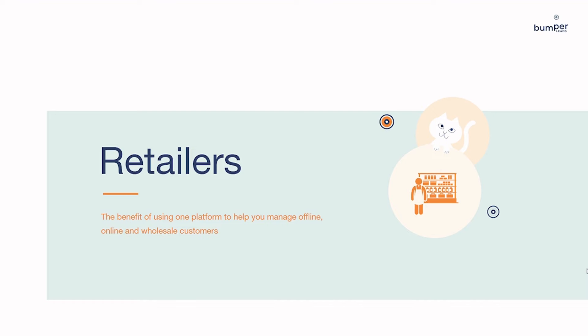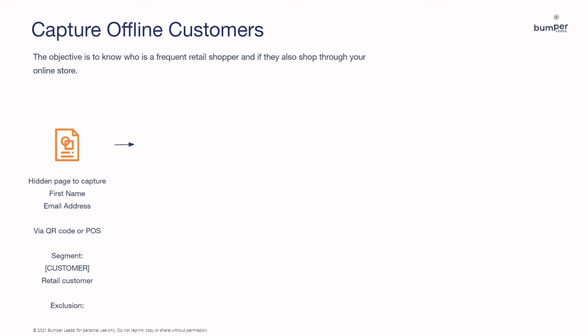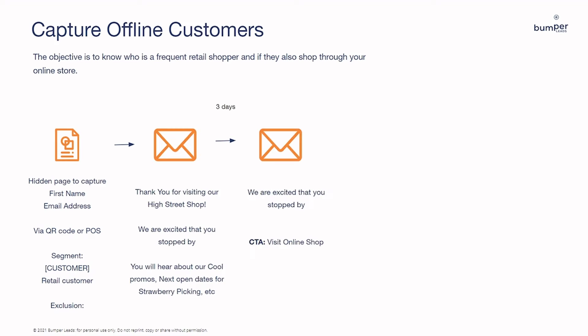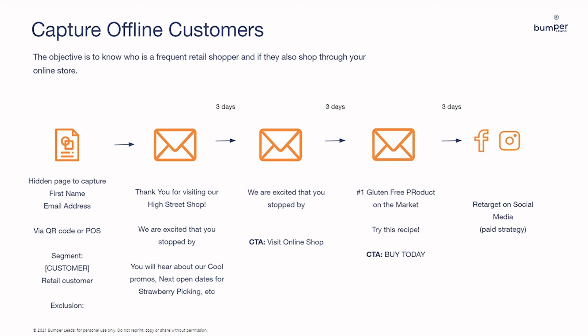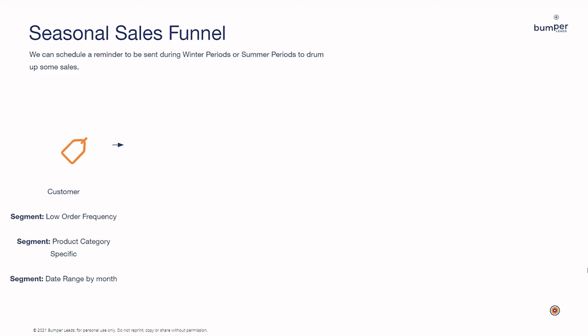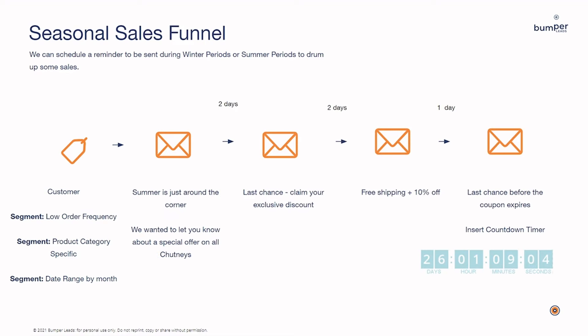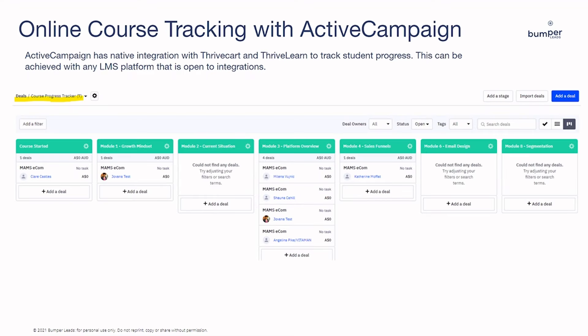For retailers with offline, online, and wholesale customers, ActiveCampaign lets you segment and treat every customer differently. If you have a physical shop, you could collect personal information using a QR code linked to an ActiveCampaign backend form, or integrate your POS system with ActiveCampaign to start nurturing customers. You can see how often somebody comes into your shop versus buying online and create different marketing messages to suit their preferred way of purchasing. When you're too busy, you could set up a seasonal sales funnel with promotional emails that act like another salesperson — generating more sales and saving time simultaneously.